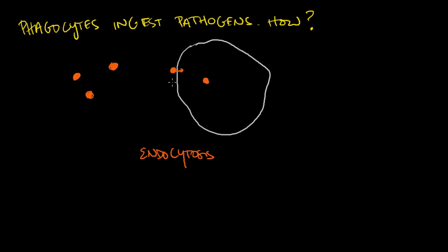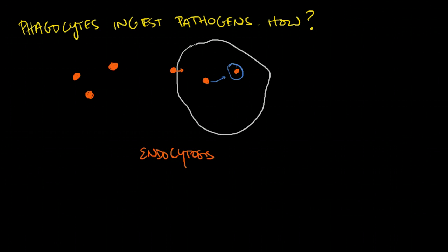This pathogen goes into the phagocyte through a process called endocytosis, finds its way inside the cell to a lysosome, and then the lysosome unleashes enzymes to break down the pathogen. These little tiny pieces are released and no longer affect the host. That's how a phagocyte works.